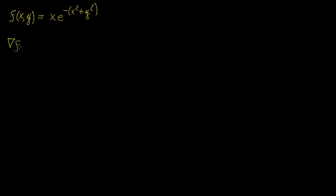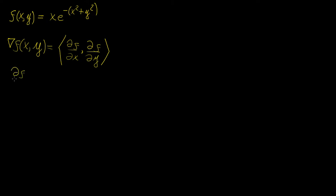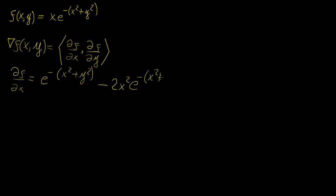We're going to compute the gradient of this function, which turns out to be a vector field. In two dimensions, we have the partial of f with respect to x as the x component, and the partial of f with respect to y as the y component. Using the product rule for the partial with respect to x, we get e to the minus x squared plus y squared, minus 2x squared times e to the minus x squared plus y squared. And the partial with respect to y gives minus 2yx times e to the minus x squared plus y squared.